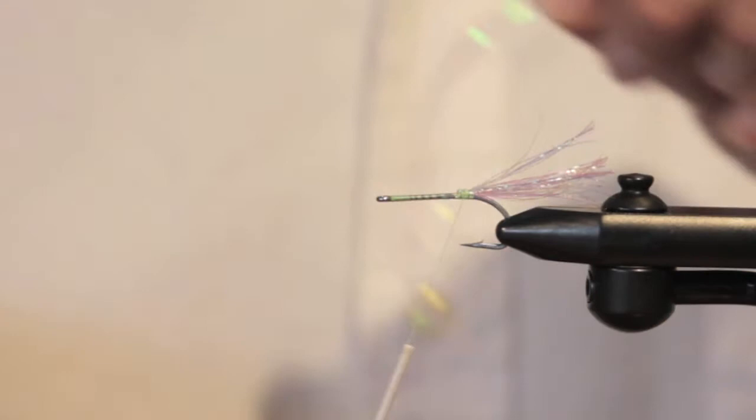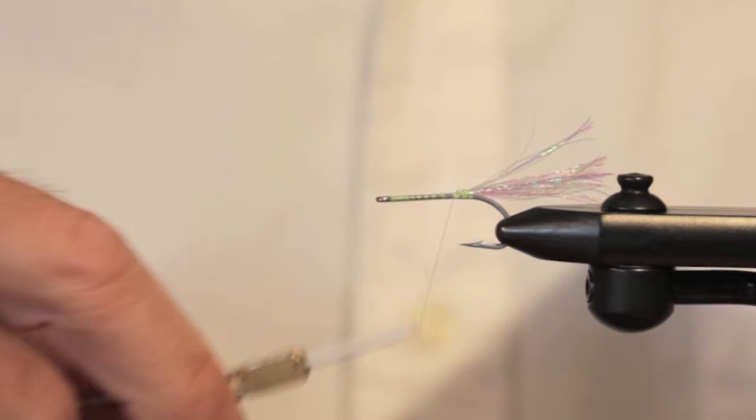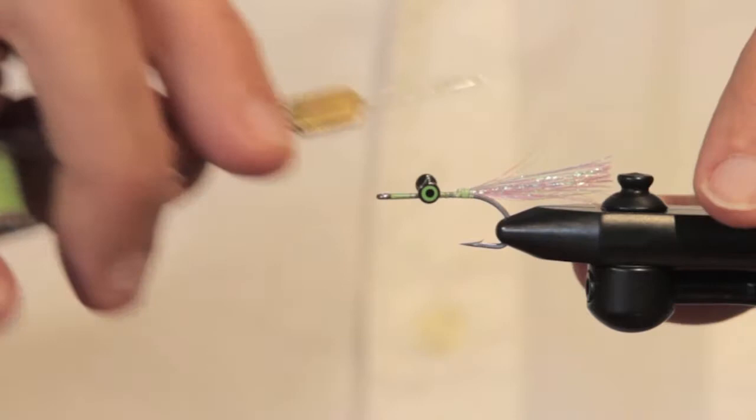The first one with dumbbell eyes. Secure those nicely towards the front of the hook, but leave plenty of space in front.